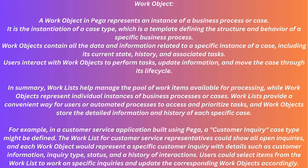Users or automated agents can access the worklist to view and select work items for processing, helping to organize and prioritize work and ensure tasks are efficiently distributed. A work object in PEGA represents an instance of a business process or case — it is the instantiation of a case type, which is a template defining the structure and behavior of a specific business process. Work objects contain all the data and information related to a specific instance of a case, including its current state, history, and associated tasks. Users interact with work objects to perform tasks, update information, and move the case through its lifecycle. In summary, worklists manage the pool of work items available for processing, while work objects represent individual instances of business processes or cases.